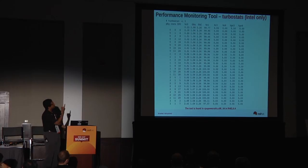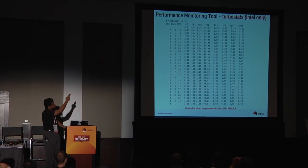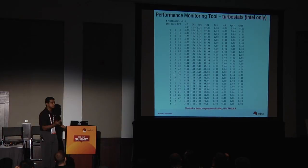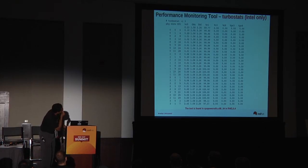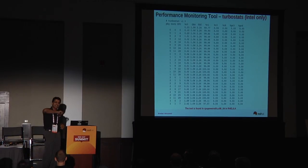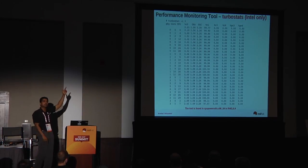Turbostat shows C-state columns (C0, C1, C3, C6) and actual operating frequency per CPU. In power save mode, even though the theoretical limit was 2.26 GHz, CPUs were operating at 1.06 to 1.08 GHz. In turbo mode, actual frequency was 2.93 GHz versus the rated 2.26 GHz. Turbostat is available in the cpupower-utils RPM, Intel only, and on newer systems lets you see exactly what frequency your CPUs are running at.